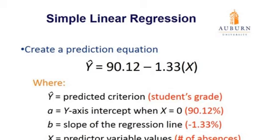In addition to our prediction equation, we can add the standard error of the estimate. For our given data, the standard error of the estimate is 7.68%. That means for any particular student we give an estimate for, we could be off by 7.68%. So our complete simple linear regression gives us: y-hat equals 90.12 minus 1.33 times x, with an estimate of error of 7.68%.